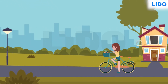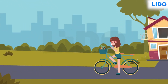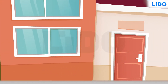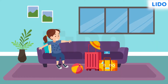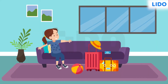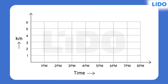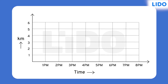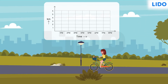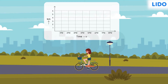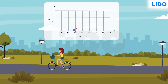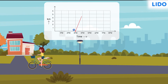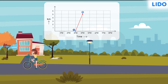Shweta was very excited about going to Veena's place. Veena was back in town for her summer vacation. Let's track her movement in an interesting way. Shweta started from her home at 3pm, travelled 5km and reached Veena's place at 4pm.